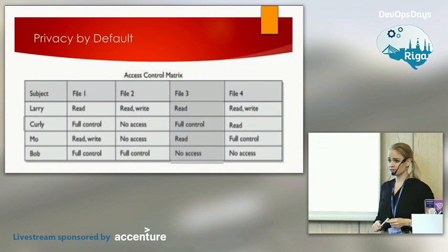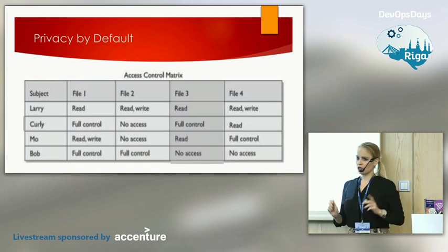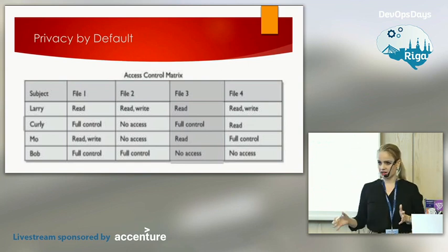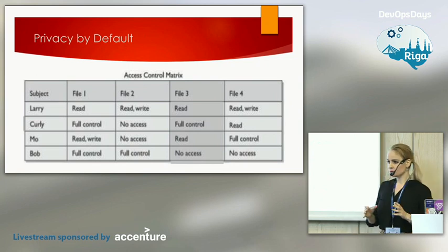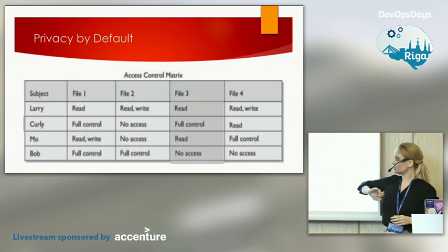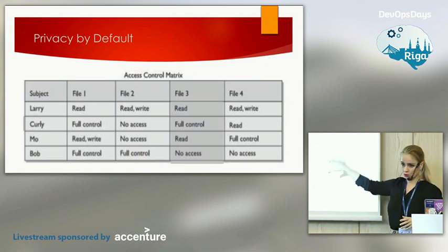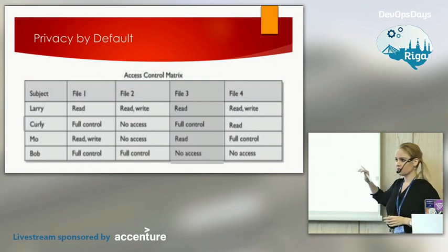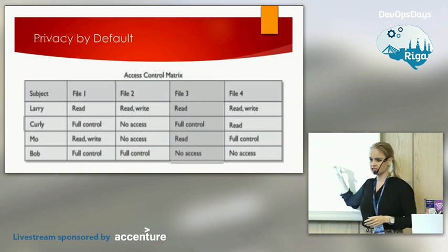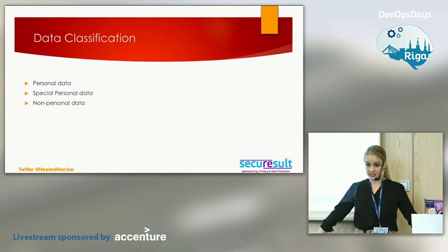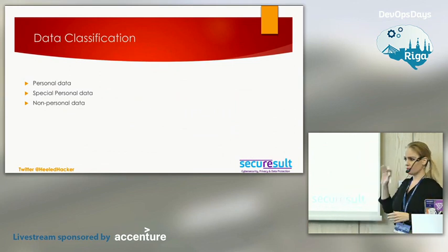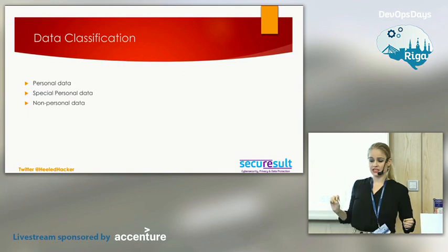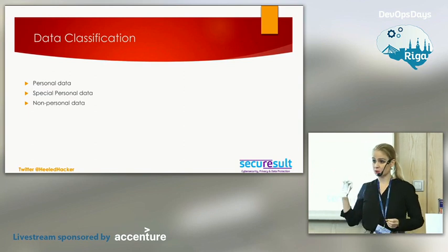Next up is privacy by default, which means do you work on a need-to-know basis with your staff? The best way to go about it is to form an access control matrix — a data authorization control matrix — to see who can access what, or can your lunch lady see everything? An important step is data classification because it's the foundation for other principles as well.